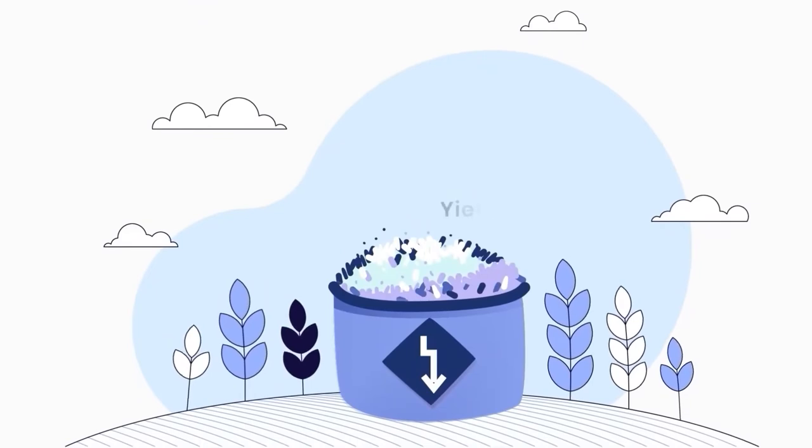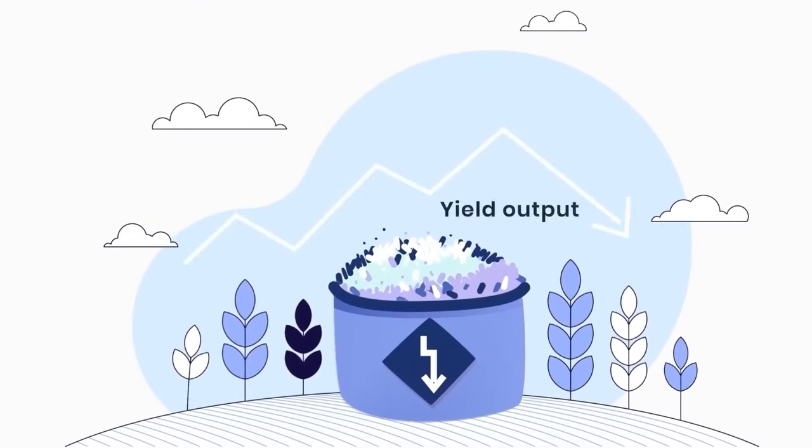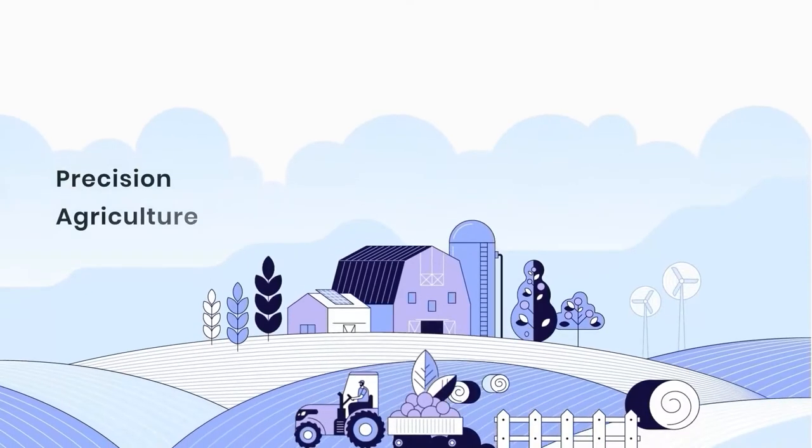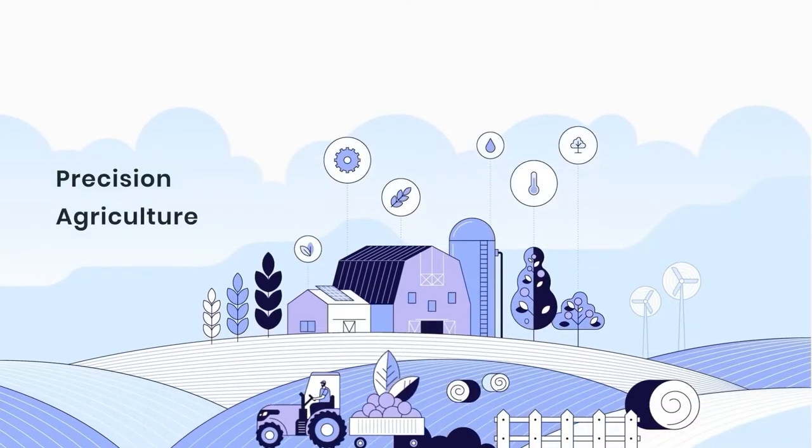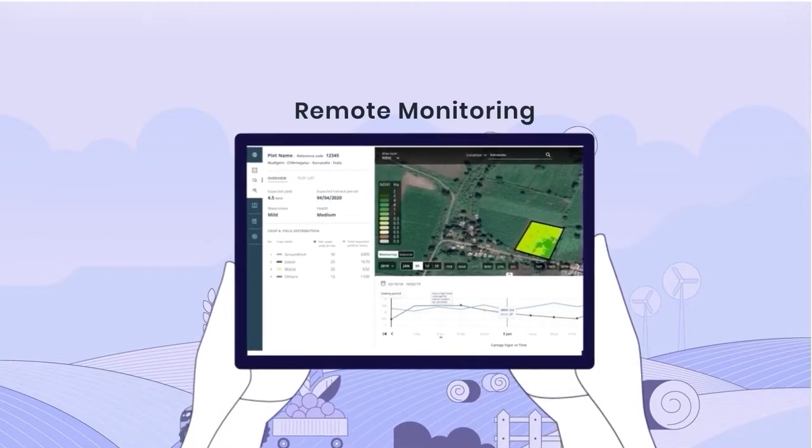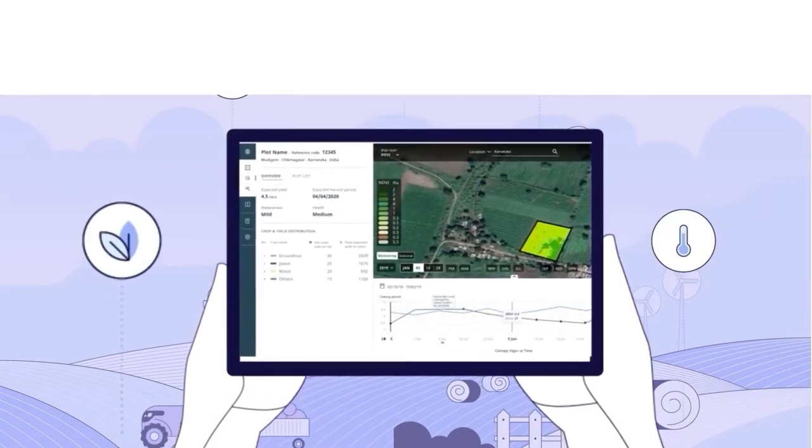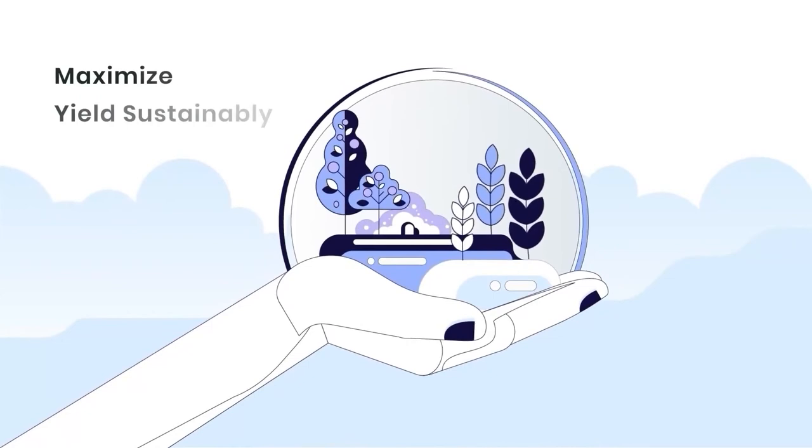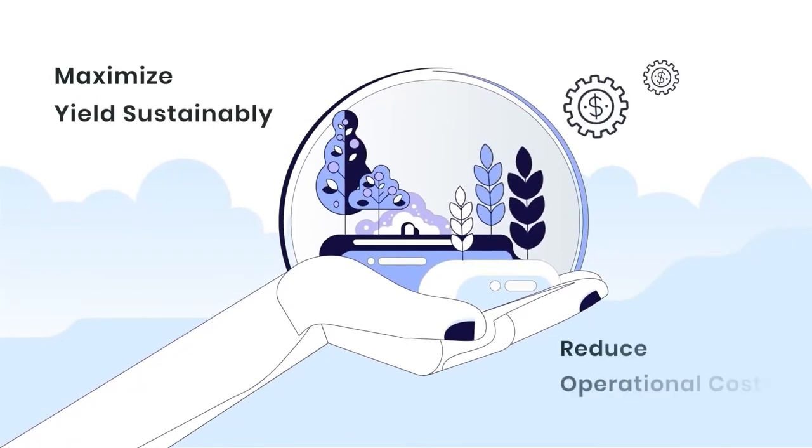As a result, the yield output often falls short of expectation. Precision agriculture enables producers to closely monitor these concerns with remote monitoring. It allows them to make informed decisions that help maximize yield sustainably and reduce their operational costs.